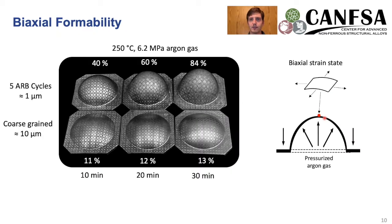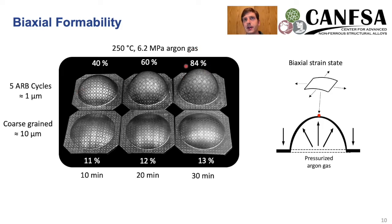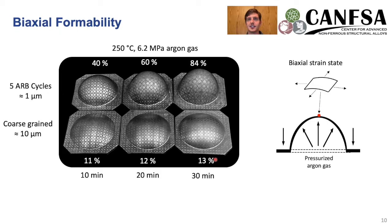Taking this one step forward for an industrial application, we want to look at a biaxial strain state as opposed to the traditional uniaxial strain state. Here I'm showing bulge tests with that biaxial strain state. The top three samples have been subject to five ARB cycles with about a one micron grain size, and we had surface strains of about 85% after about half an hour of deformation. Comparing that to the baseline coarse grain 5083 aluminum with a 10 micron grain size, after half an hour we're still only at about 13% surface strain. This is really exciting because it shows we can get a lot of ductility through superplasticity about 250 degrees lower than what we can conventionally achieve with this ARB processing.